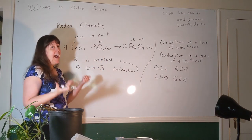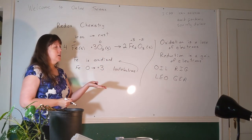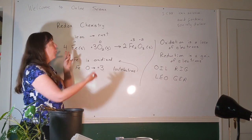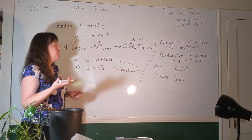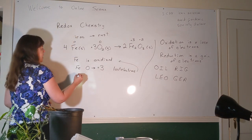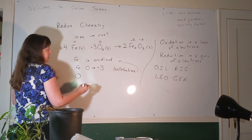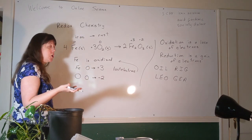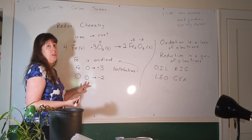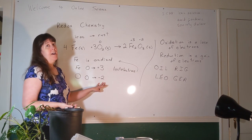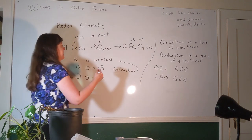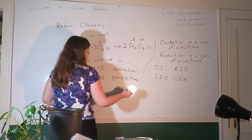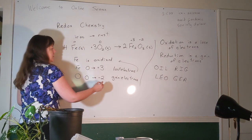Oxidation and reduction are a pair — they always go together. In order for one thing to lose electrons, something else has to gain them. In this reaction, the only other element is oxygen. Oxygen started with a charge of zero and ended with a negative two. A negative charge means extra electrons, so the oxygen had to gain electrons — and therefore the oxygen was reduced.